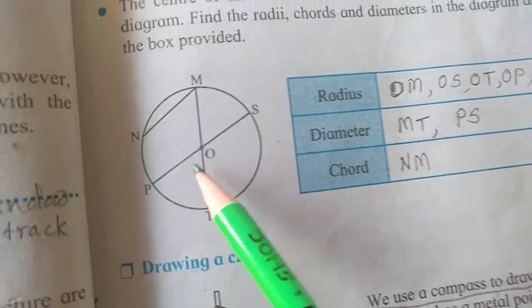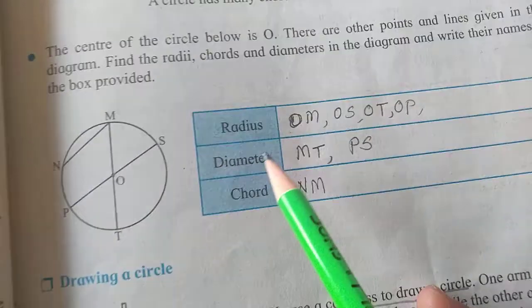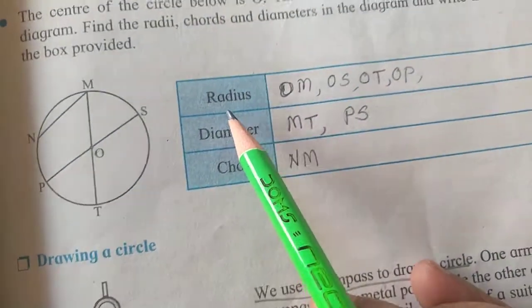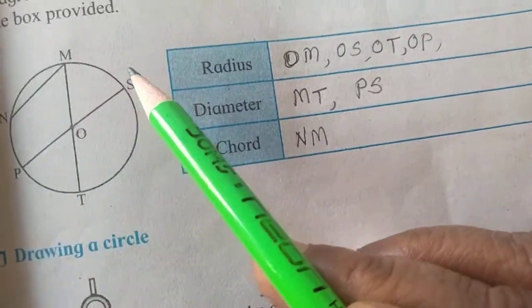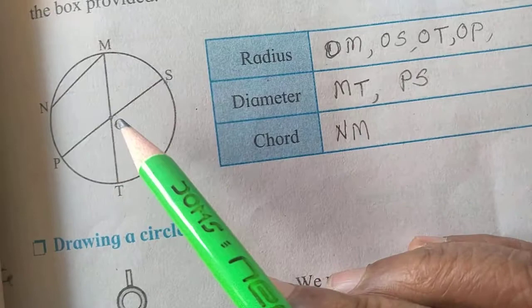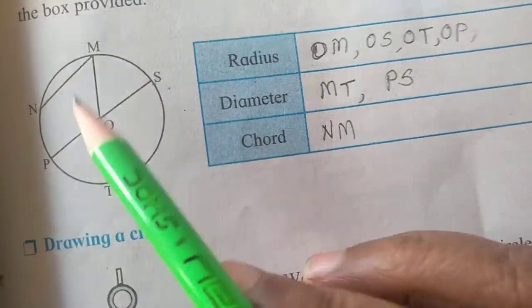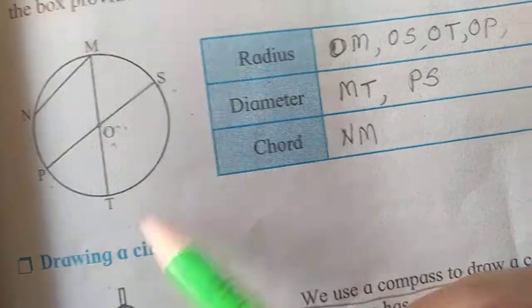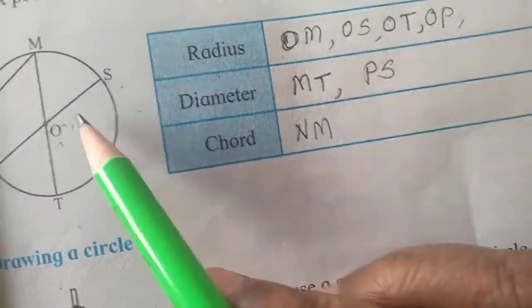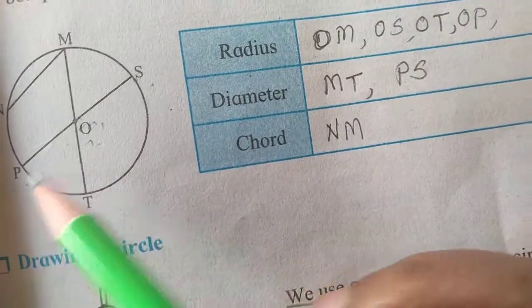Look at the figure. Here, radius. We have to find the radius, means from center to any point of the circle. OS is the radius, OM also, OP and OT. Here, four radius are there: OS, OM, OP, and OT.